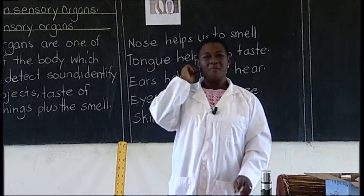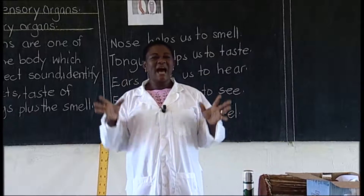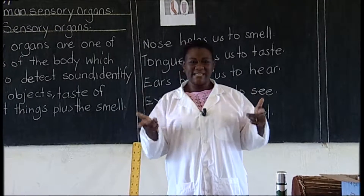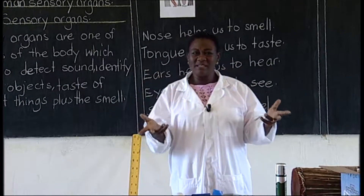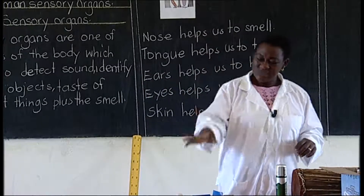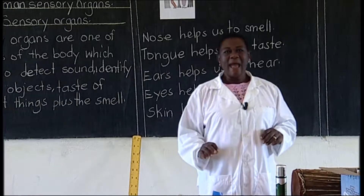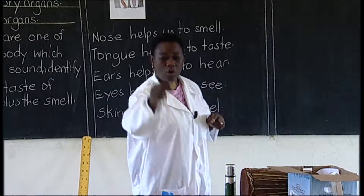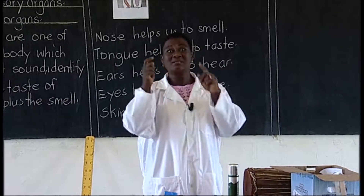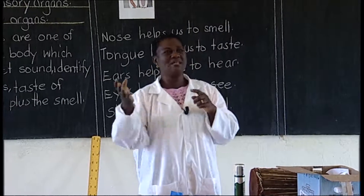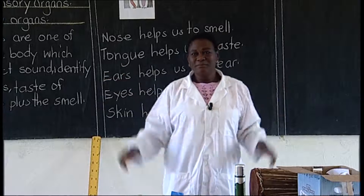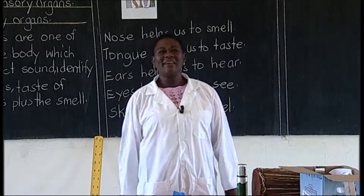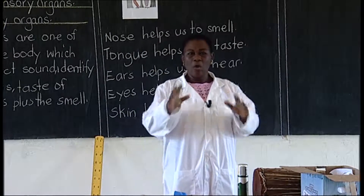So the skin helps us to feel. Remember, sensory organs are part of the body, and they help us to detect sound and to identify different things. How will I know that this one has a blue color? I will use my eyes, and then I will know this is blue, this is yellow, this is orange. How will I know that someone is tall, fat, thin, or short? I will look at that person and identify them.